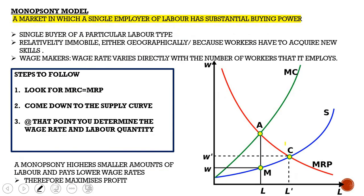The monopsony model is a market in which a single employer of labor has substantial buying power — like a monopoly in your labor market. You have a single buyer of a particular labor type. Workers are relatively immobile, either geographically or because they would have to acquire new skills. The monopsony is a wage maker, and the wage rate varies directly with the number of workers it employs.